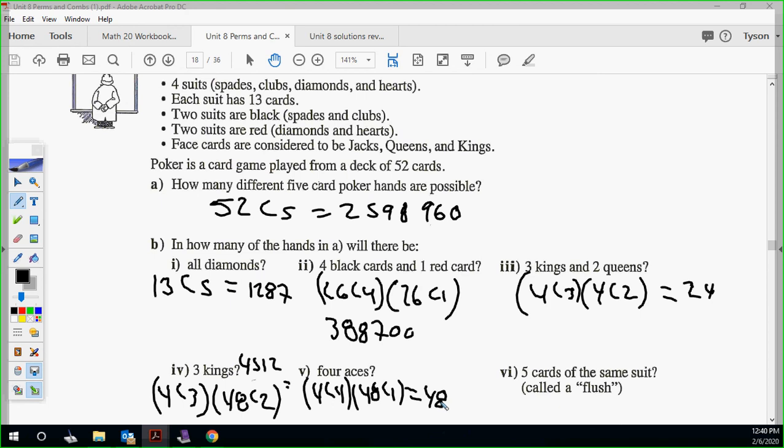Five cards of the same suit called a flush. So we kind of already did that, right? All diamonds. So that would just be the 13C5 again. But what's the difference of question one and this last question here? Right. So we just times this by four. That's how many ways to get a flush. Not just diamonds. All of them. So you have the diamonds or whatever. The suit. There's four suits. So that would be 1287. It ends up being 5148.